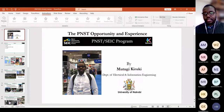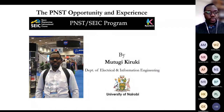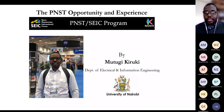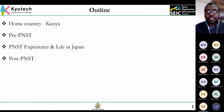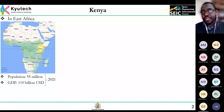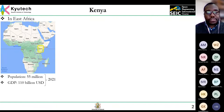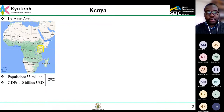Thank you. Hi everyone. My name is Mutugi-Kiruki. I'm currently working at the University of Nairobi, Kenya. The outline of this presentation covers: something about Kenya, pre-PNST experience, the PNST experience and life in Japan, and the post-PNST experience. Kenya is in East Africa with a population of approximately 55 million and a GDP of 110 billion USD as per 2021 statistics. Kenya is famous for being a world-class safari destination, great tea and coffee, and some long-distance runners.